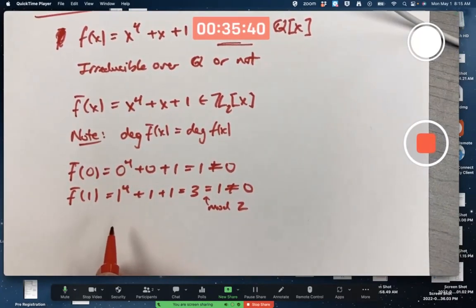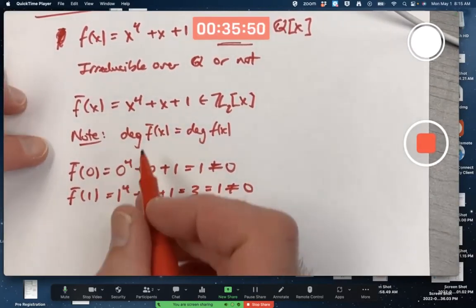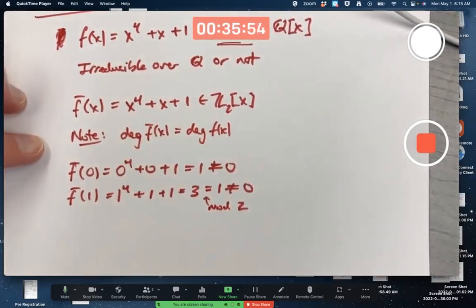This verifies that f bar of x has no linear factors. It also would verify that it has no cubic factors, because if it's got no linear factors, it's not going to have a cubic factor. A linear factor times a cubic is what you would need to get a fourth degree. So the only question left is whether it's got any quadratic factors or not.